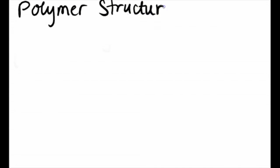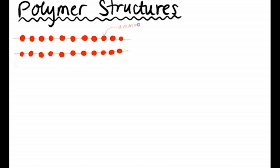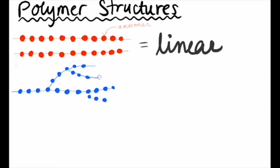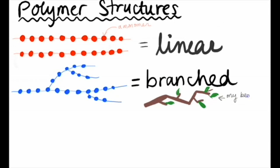Now that we understand the basic idea behind polymers, we can look at some of the different structures they can have. They can be linear, where the polymer is just one long continuous chain. They can also be branched, where the polymer at some point breaks off into multiple chains, just like a tree branch.